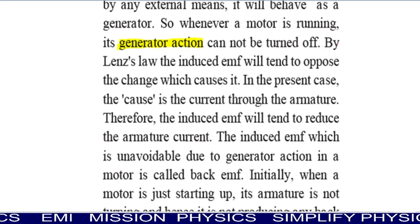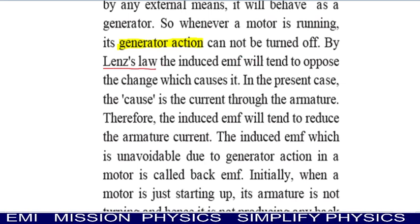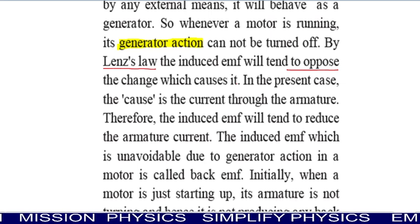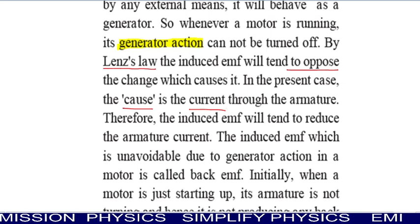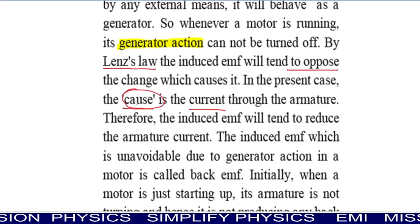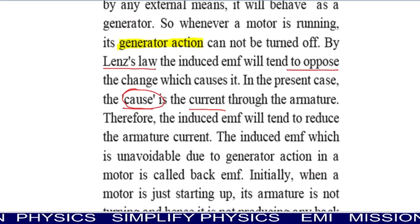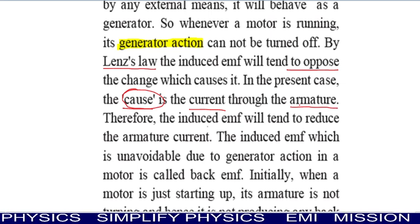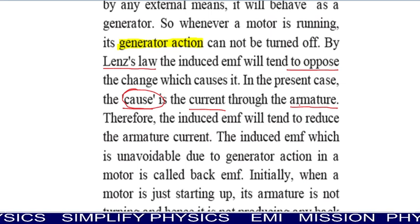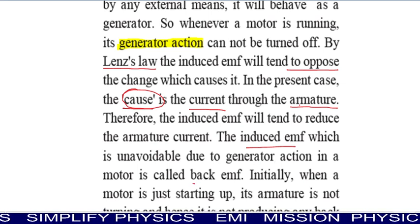If a DC generator is connected to a battery, it will run as a motor. And if a motor is turned by any external means, it will behave as a generator. So whenever a motor is running, its generator action cannot be turned off. By Lenz's Law, the induced EMF — also called back EMF — will tend to oppose the change which causes it. In the present case, the cause is the current through the armature. So the induced EMF will tend to reduce the armature current. Hence, the induced EMF which is unavoidable due to generator action in a motor is called back EMF.